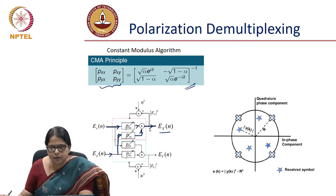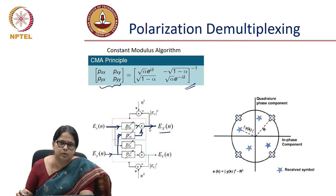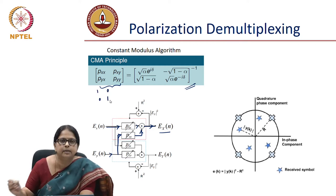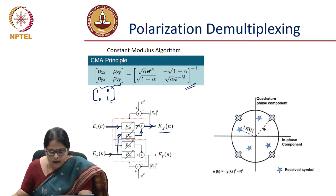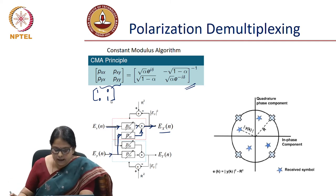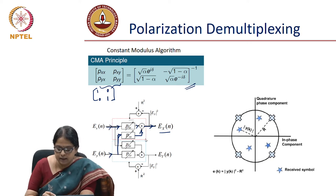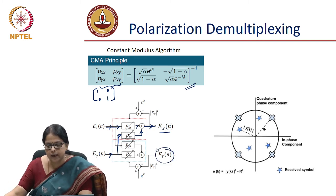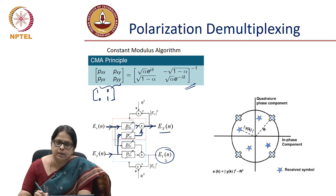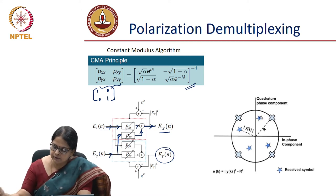The algorithm relies on the fact that all received points should lie on the same radius. We start with Pxx, Pxy, Pyx, and Pyy as unknowns, initializing them as the identity matrix (1, 0, 0, 1). We know that the X-polarized electric field is now a linear combination of the input X and input Y. So you try to construct the electric field for X-polarization and the corresponding one for Y-polarization.